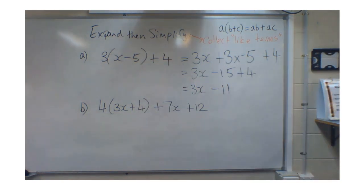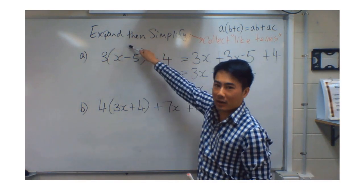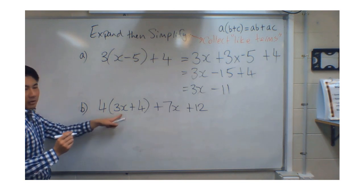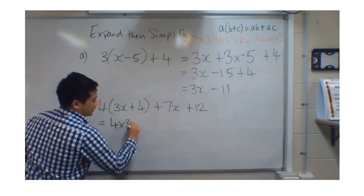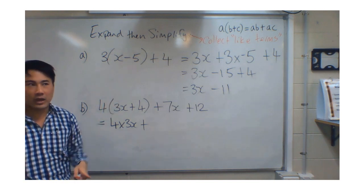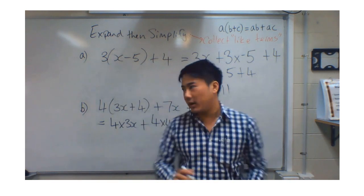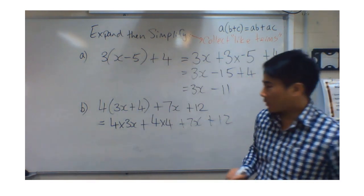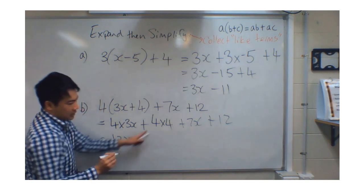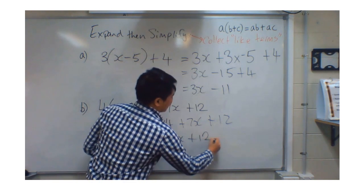Let's try another one: 4 bracket (3x plus 4) plus 7x plus 12. First step, expand the bracket. Whatever's outside — 4 — multiply by the first term: 4 times 3x. Plus whatever's outside — 4 — multiplied by the second term: 4 times 4. Then don't forget the 7x and the 12: plus 7x plus 12. So we get 12x plus 16 plus 7x plus 12. Expanding is done.